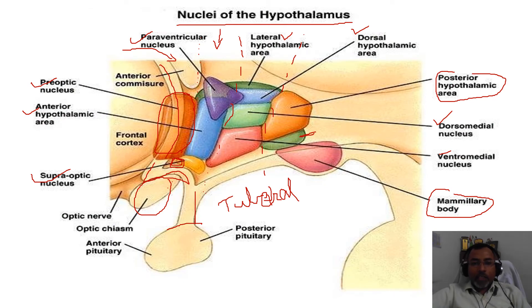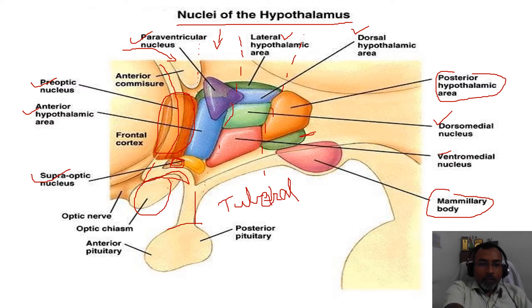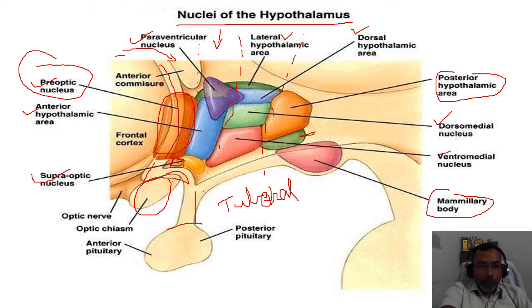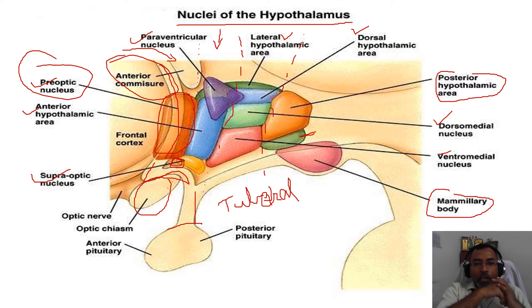These are the various nuclei of the hypothalamus, depicted in various colors. Starting from the front, the foremost nuclei in the hypothalamus are very close to the anterior commissure — these are called the preoptic nuclei. The ventrolateral part of the preoptic nuclei is considered a sleep-promoting area.